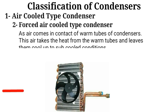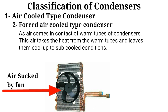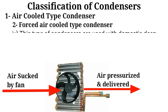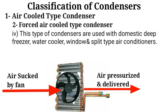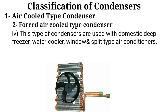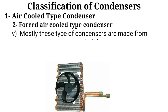As air comes in contact with the warm condenser tubes, the air takes the heat from the tubes and leaves the space cool. These types of condensers are used with domestic deep freezers, water coolers, and window and split type air conditioners. Mostly these types of condensers are made from copper materials.